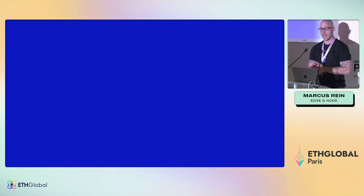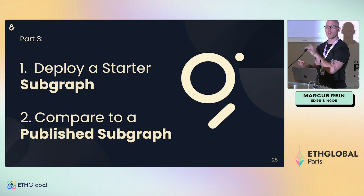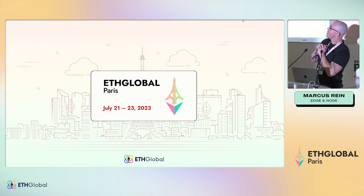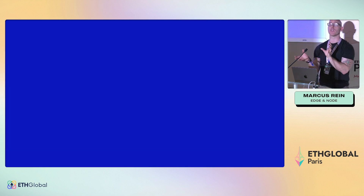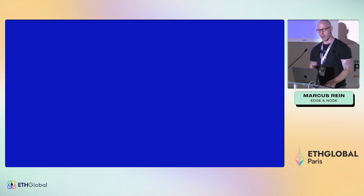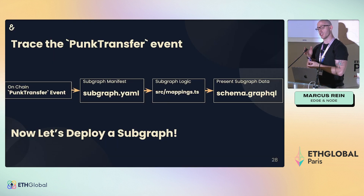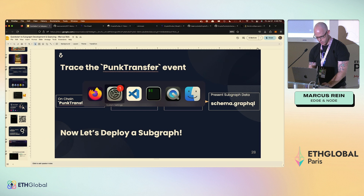We're going to deploy a starter subgraph and then compare it to a published subgraph — both pointing to the same smart contract — so you can see how different it is to get data back from a basic versus a more well-built subgraph. We'll go to thegraph.com Studio, create a subgraph called 'Live Global Paris Demo,' index the crypto punks smart contract on Ethereum, and trace the PunkTransfer event all the way to your schema.graphql.